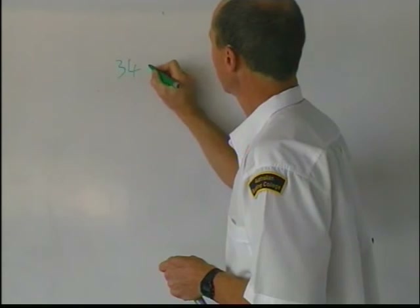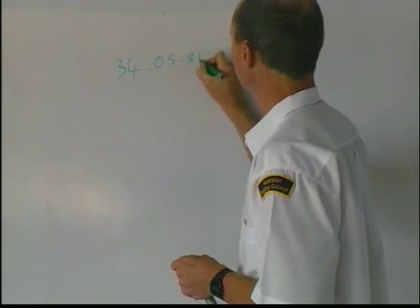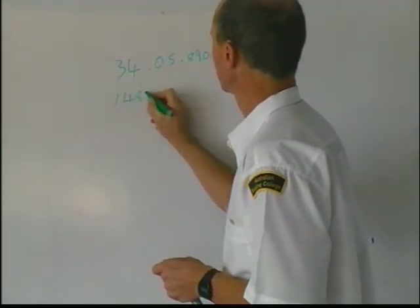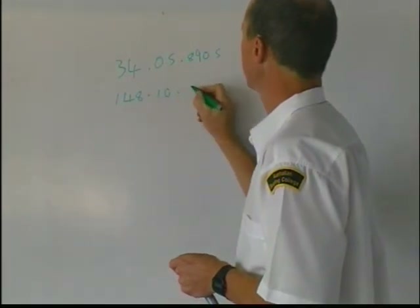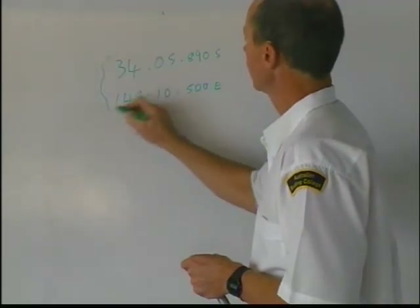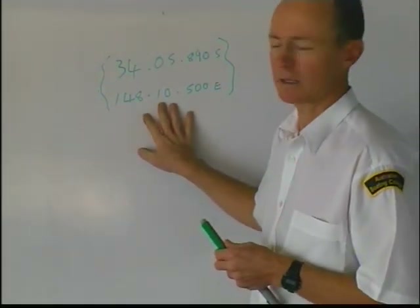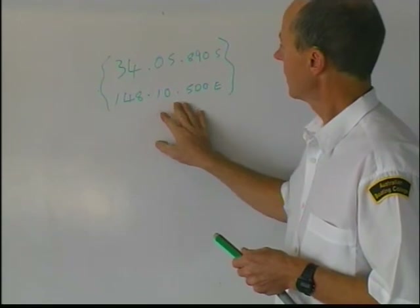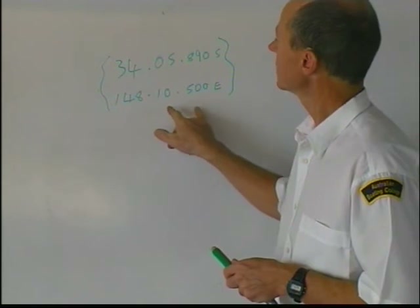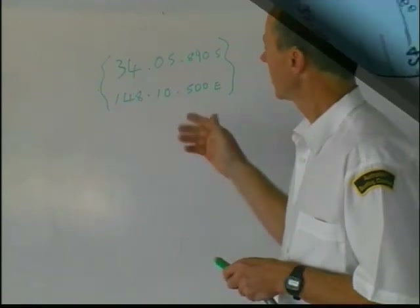A combination of a latitude — for example 34 degrees, 5 minutes, 0.890 south — and a longitude such as 148 degrees, 10 minutes, 0.500 east, constitutes what's known as a waypoint. You'd key these two coordinates into your GPS, and in GPS terminology these two make up a waypoint. You could then say 'go to' that waypoint and the GPS would draw a dotted line pointing at that spot.